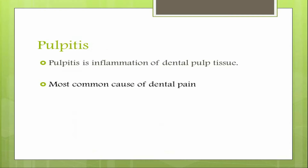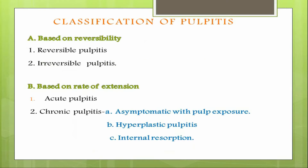Pulpitis means it is an inflammation of the dental pulp tissue, or it is the response of the pulp to an injury. There are various classification systems for pulpitis. Based on reversibility, it can be classified into reversible and irreversible pulpitis. Based on rate of extension, it can be classified into acute and chronic pulpitis.